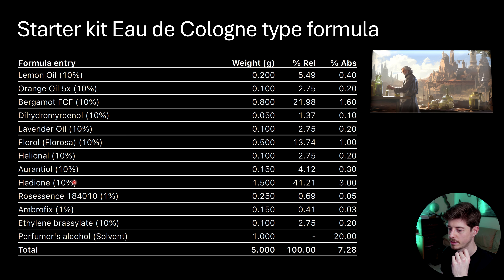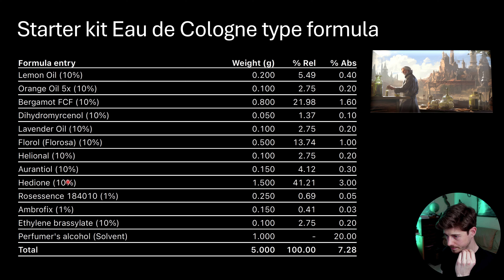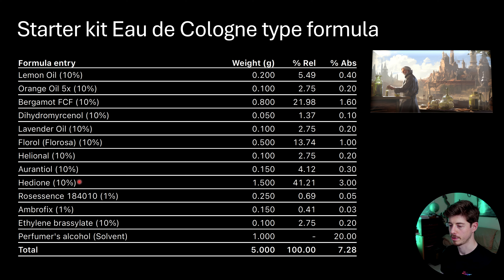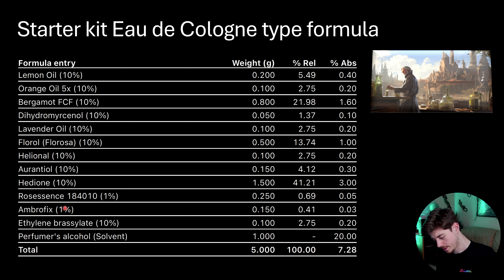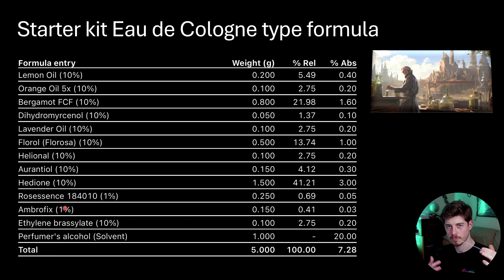Hedion's citrus facet makes it really perfect for this kind of formula, which is dominated by citrus notes and top notes, meaning there's not much going on in the base. Putting hedion in there gives the formula something more substantial later on — it doesn't taper off as quickly as you'd usually expect for a cologne. I've got my sample here which I made last week, and it's really melded together quite well, which is quite common for colognes.